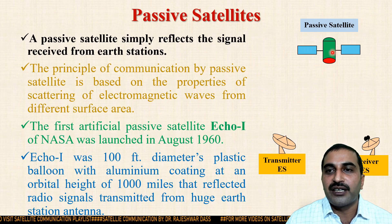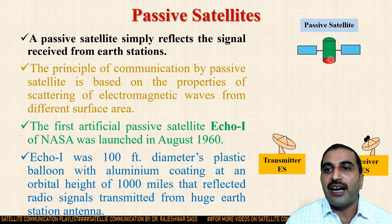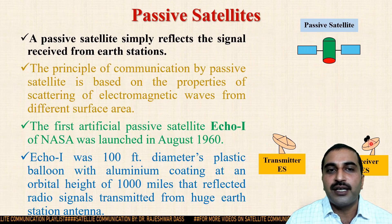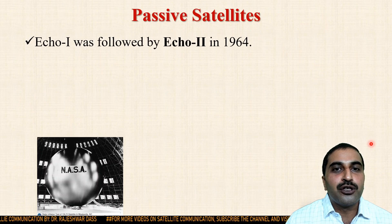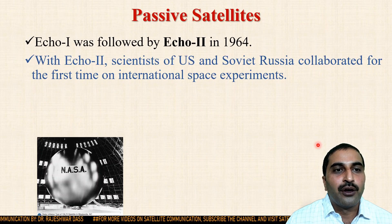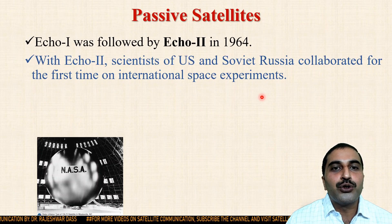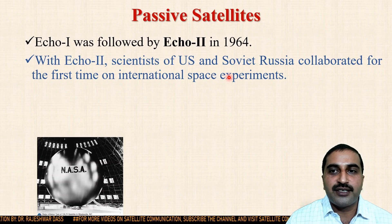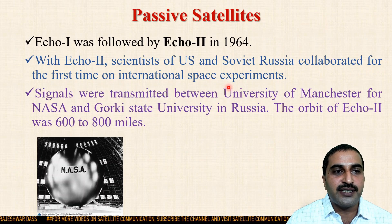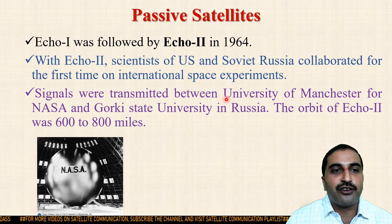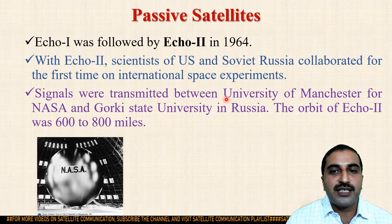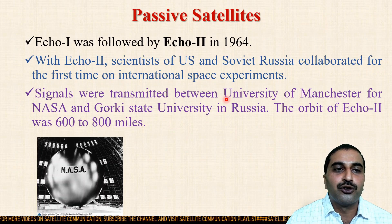After ECO-1, ECO-2 came into the picture in 1964. With ECO-2, scientists of the US and Soviet Russia collaborated for the first time on international space experiments. Signals were transmitted between the University of Manchester for NASA and Gorky State University in Russia. The orbit of ECO-2 was 600 to 800 miles.